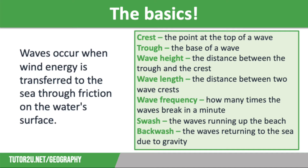Waves occur when wind energy is transferred to the sea through friction on the water's surface. There are several important key terms you need to know. The point at the top of the wave is known as a crest and the base of the wave is known as a trough. Wave height is the distance between the trough and the crest, and wavelength is the distance between two crests. You also need to know the term wave frequency, which is how many times the waves break in a minute.